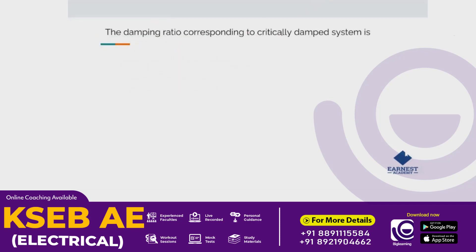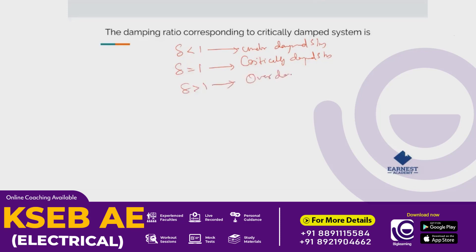For damping ratio: if damping ratio is less than 1, the system is underdamped. If damping ratio equals 1, the system is critically damped. If damping ratio is greater than 1, the system is overdamped. For the critically damped system, delta is equal to 1.